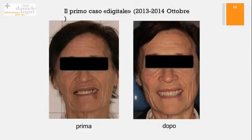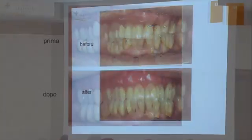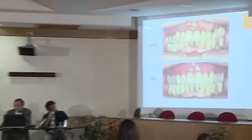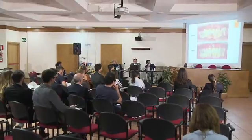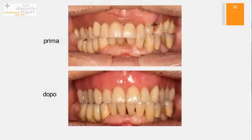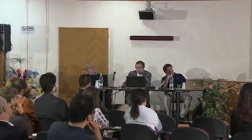Qui vedete la prima paziente che abbiamo trattato con il sistema digitale di progettazione delle protesi, prima e dopo il trattamento. L'estetica che abbiamo raggiunto dal mio punto di vista è buona. La cosa interessante è che dall'inizio alla fine abbiamo fatto in bocca della paziente solo una prova del lavoro: tutto è stato progettato in digitale. Dopo la progettazione digitale ho fatto semplicemente le impronte, le ho date al tecnico, il tecnico ha messo in articolatore, ha fatto il lavoro, abbiamo fatto una prova e poi ho consegnato il lavoro.